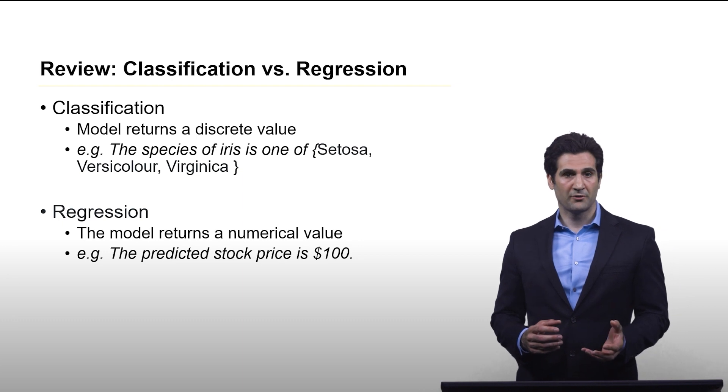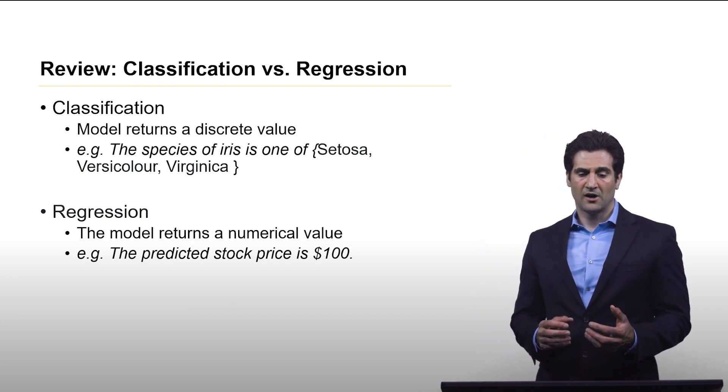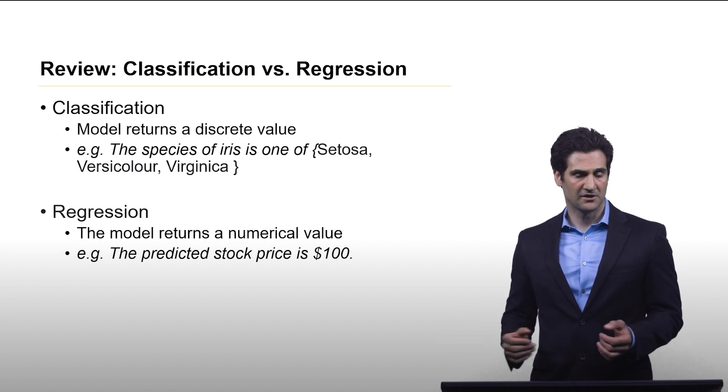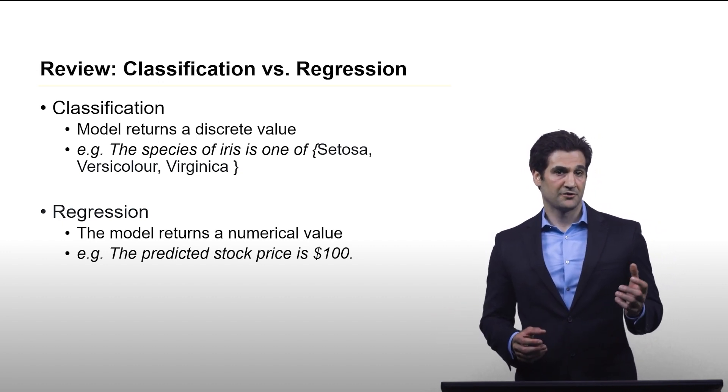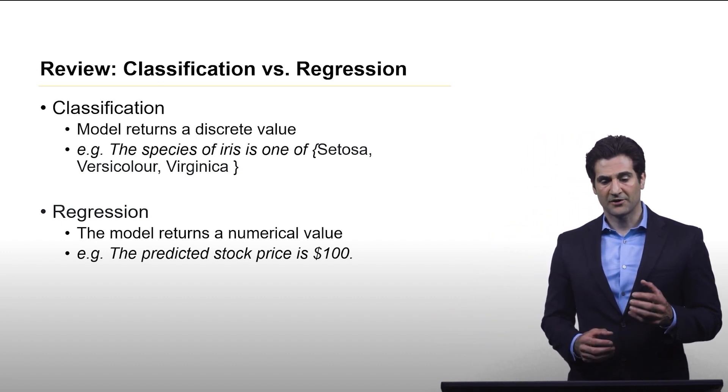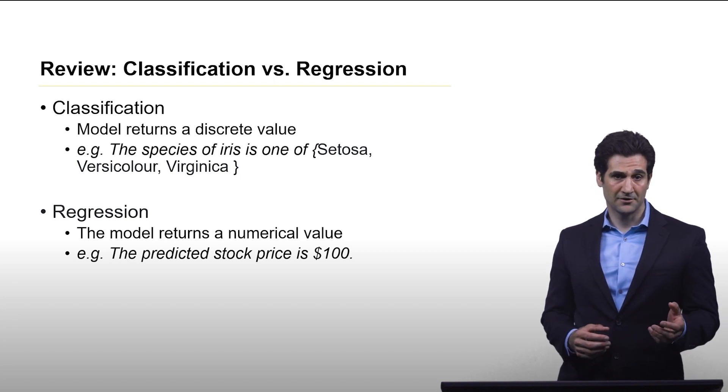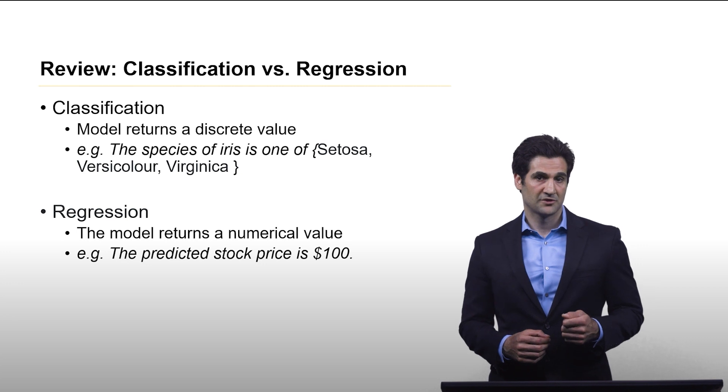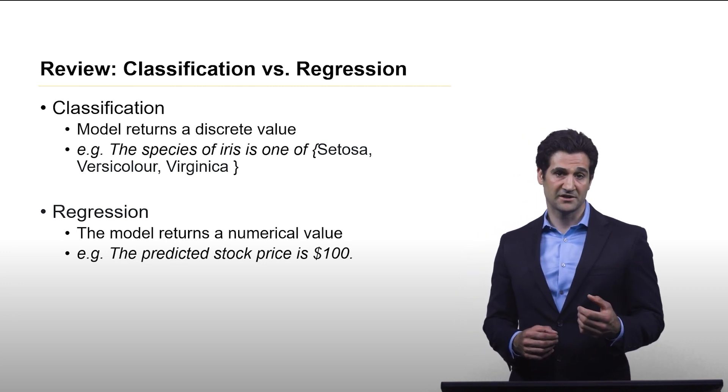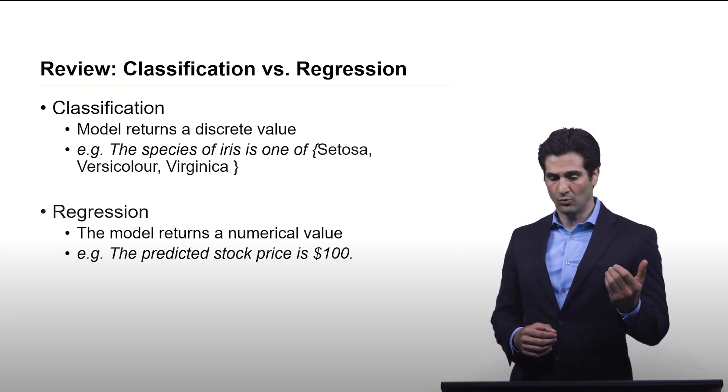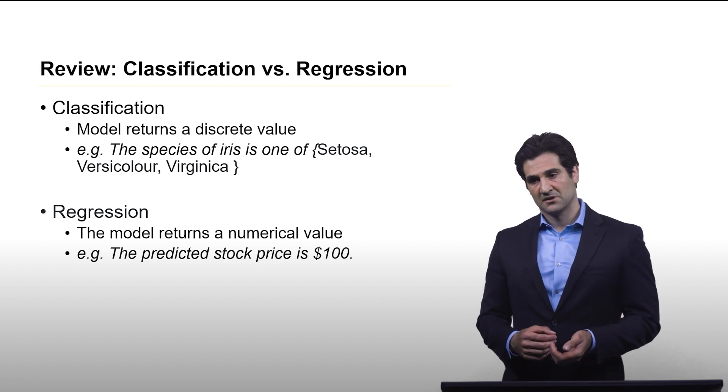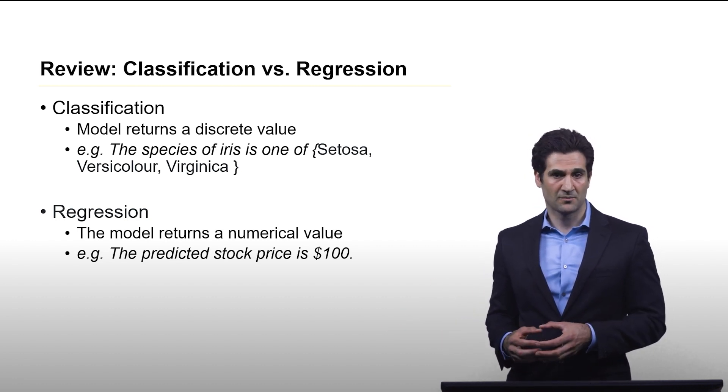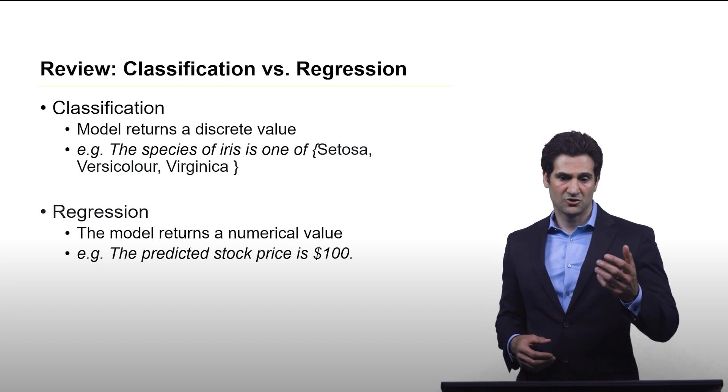As a quick review, there are two different ways of machine learning that we can think about, one called classification. With the classification model, the model is going to be returning a discrete value. In the case of our iris dataset, it will give you one of three species. In other classification problems, such as a binary classification problem, you will get a true or false.